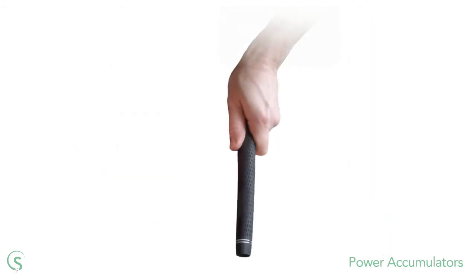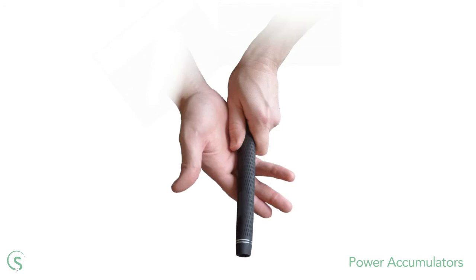The pressure point for this accumulator depends entirely on how we're uncocking the left wrist. If you're doing so manually, pushing the club head away from yourself, then you'll feel the pressure point in the right hand, in around the same place as you would for the first power accumulator.